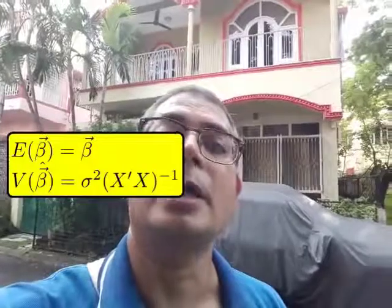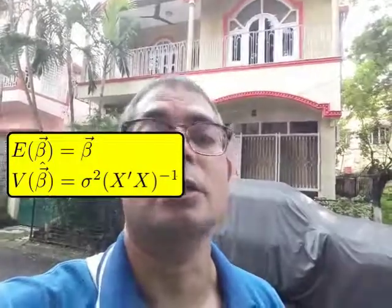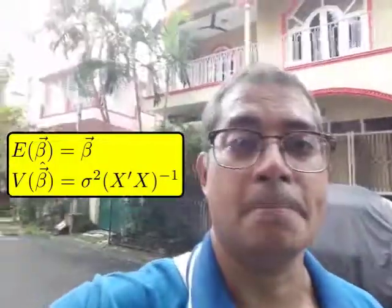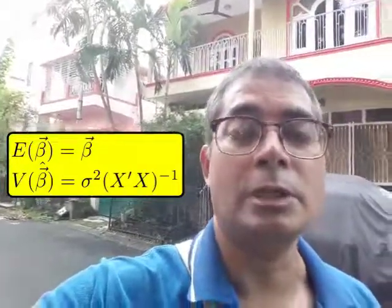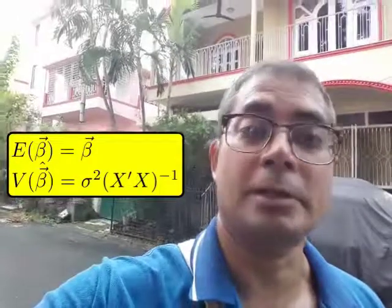So, we saw that the least squares estimator, assuming that it exists uniquely, has some interesting properties under the Gauss-Markov setup, namely, number one, it is unbiased and number two, it has the expression for variance.